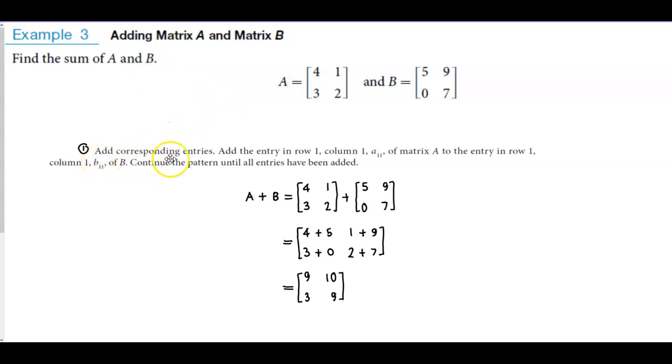So in step one, we're going to add corresponding entries. We're going to add the entry in row one, column one of matrix A to the entry in row one, column one of matrix B. And then we're going to continue the pattern until all entries have been added.